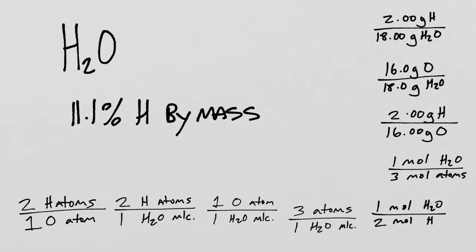If water is 11.1 percent hydrogen by mass, then we could say that every 11.1 grams of hydrogen, we should find 100 grams of water. That should make sense: 11.1 is 11.1 percent of 100. So if we had 100 grams of water, we would have 11.1 grams of hydrogen. This is just using the information here in percent mass as a conversion factor.